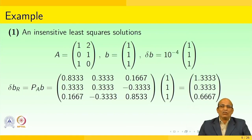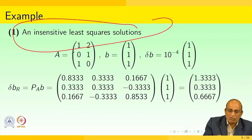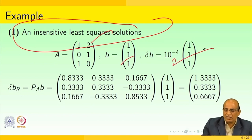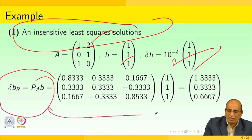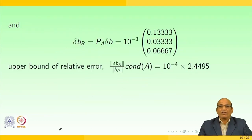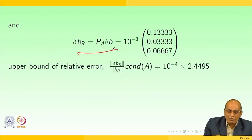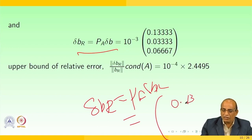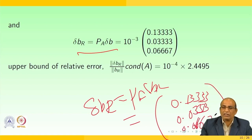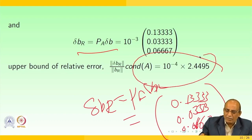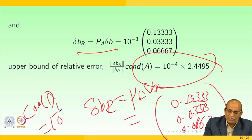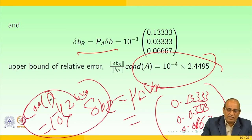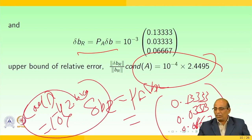Let us see an insensitive least square solution example. Matrix A, vector B, and delta B with very small entries are given. We compute delta B_R equals P_A times delta B, obtaining entries like 0.133333, 0.033333, and 0.06667. The condition number of A turns out to be 10 to the power minus 4 times 2.4499, which is a very small value.